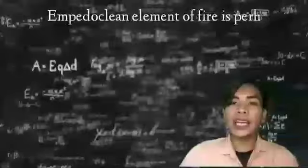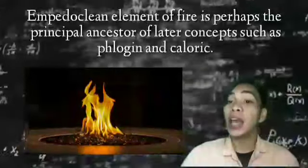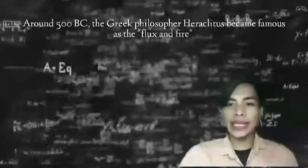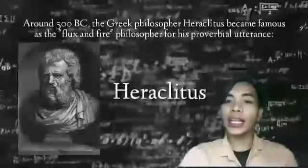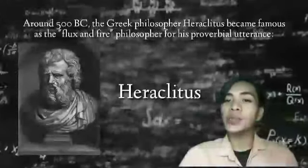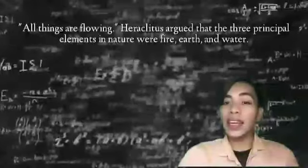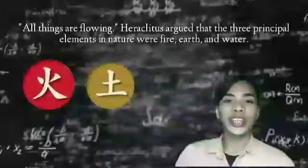The Empedocles element of fire is perhaps the principal ancestor of later concepts such as phlogiston and caloric. Around 500 BCE, the Greek philosopher Heraclitus became famous as the flux and fire philosopher for his proverbial utterances. All things are in flux. Heraclitus argued that the three principal elements in nature were fire, earth, and water.